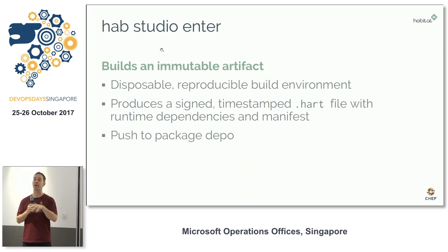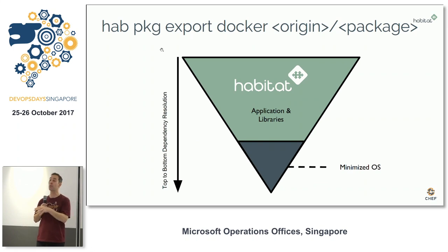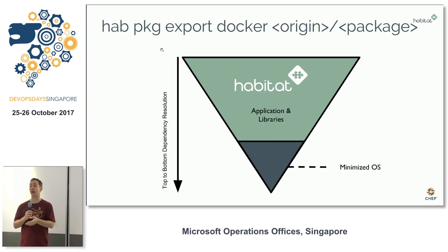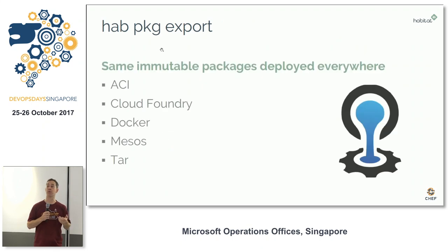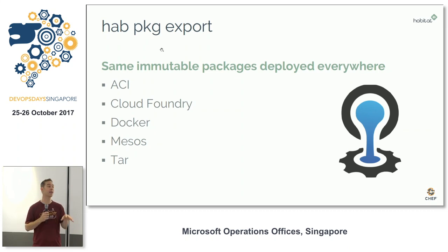It's an empty Docker container that compiles your application and produces a package that can then be pushed to an application repository. It can be exported to Docker. So we have an immutable artifact that tells you how that application is managed. We can send it straight to Docker. We also support other formats like Cloud Foundry — Pivotal Cloud Foundry, Mesos, Kubernetes, or just run it on any Linux file system.